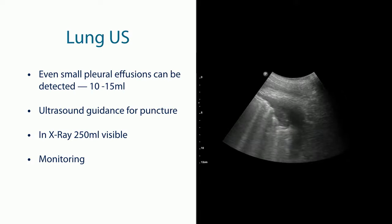Lung ultrasound can even detect really small amounts of free fluid, 10 to 15 ml. In chest x-ray we need 250 ml to detect a pleural effusion. Ultrasound is optimal for guidance of procedures such as thoracentesis and it is also very important that you can monitor the effusions with ultrasound. So if you for example give a patient diuretics or antibiotics you can see that the effusion becomes smaller, stays the same or even becomes larger.